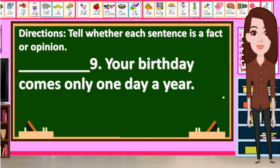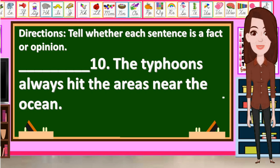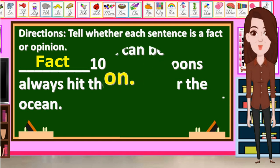Number 9: Your birthday comes only one day a year. What is the answer? Very good — it is a fact. Number 10: The typhoons always hit the areas near the ocean. So what do you think is the correct answer? Yes, it is a fact.